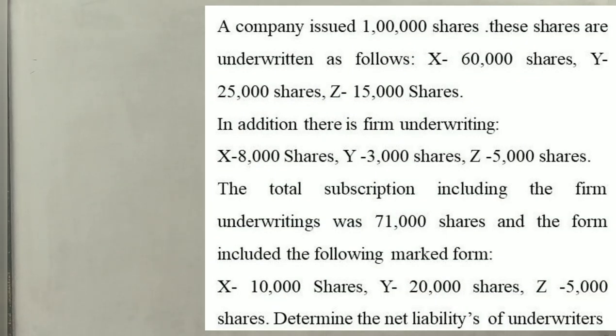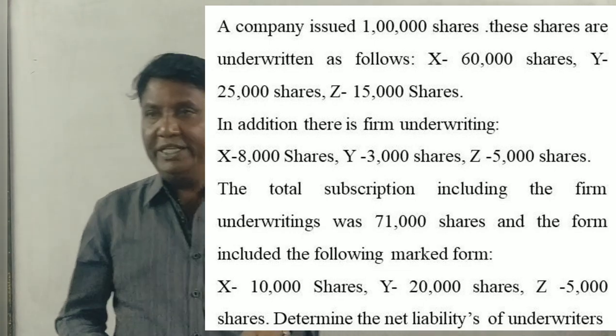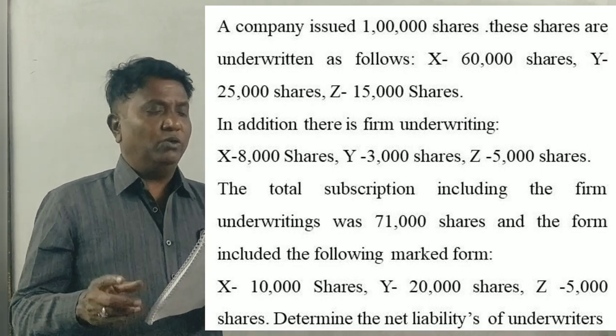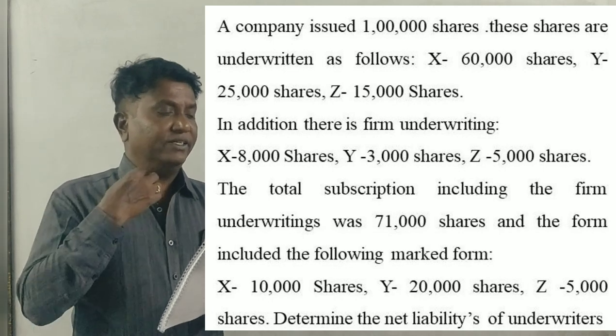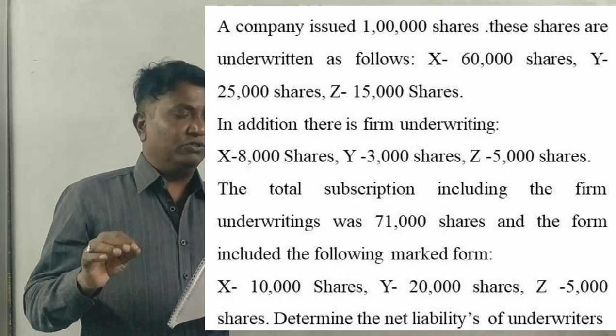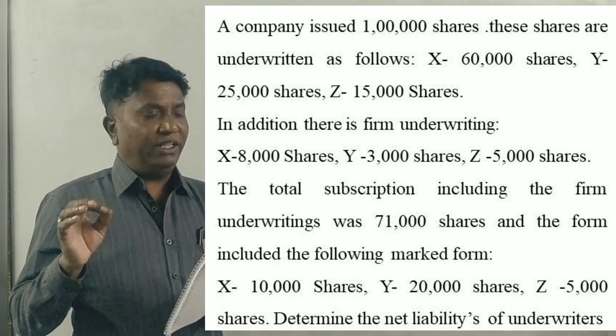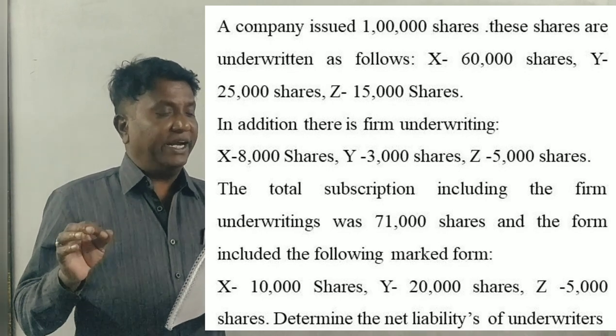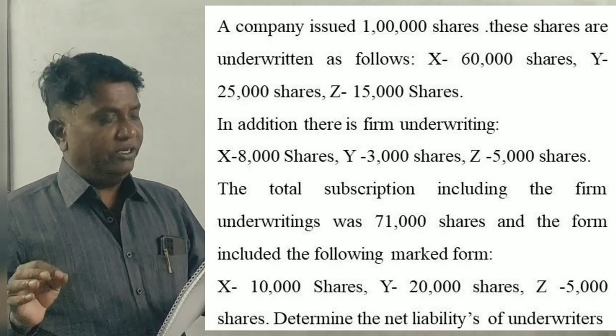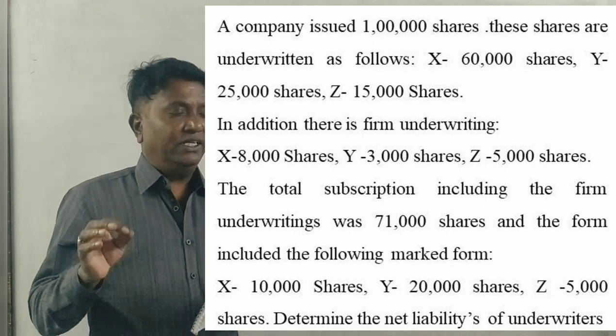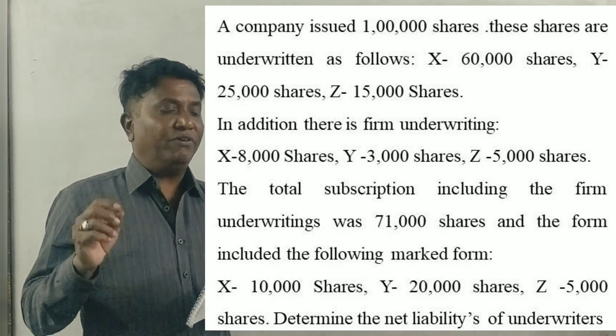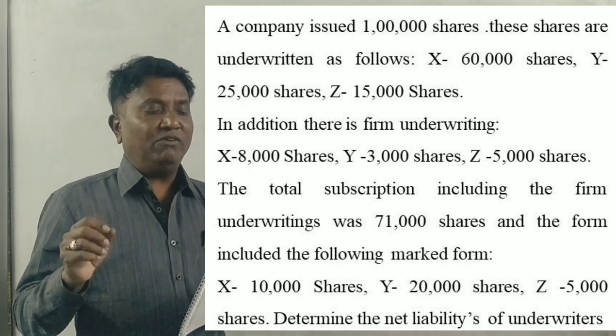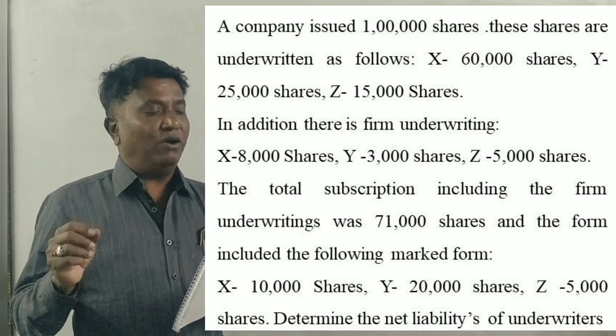Corporate Accounting. A company issued 1 lakh shares. These shares are underwritten as follows: X 60,000 shares, Y 25,000 shares, Z 15,000 shares. The firm underwriting of X is 8,000 shares, Y 3,000 shares, Z 5,000 shares.